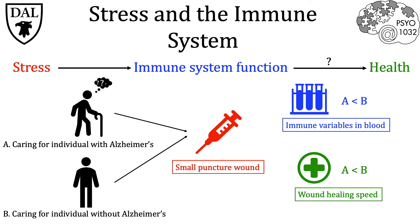In both cases, what they found was that Group A patients had significantly fewer immune variables in the blood than Group B. As well, with wound healing, it actually took much longer for Group A to have these small wounds heal than those in Group B, who experienced a greater wound healing speed. This suggests that stress does induce diminished effects in the immune system, subsequently resulting in direct effects to the health of the individuals, exemplified here by the actual healing of the small puncture wound.